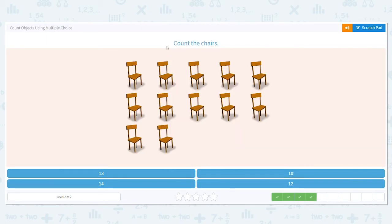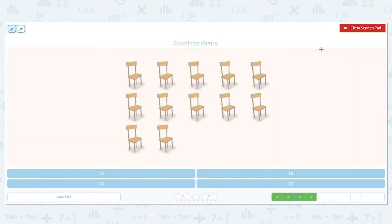This time we're going to count the chairs. Our answer choices are 13, 10, 14, and 12. Let's mark them off as we count. Count with me. One, two, three, four, five, six, seven, eight, nine, ten, eleven, twelve. There are twelve chairs.